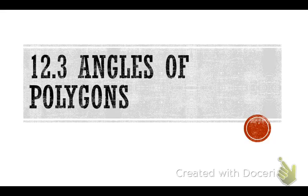Today we're in section 12.3, angles of polygons. Yesterday we actually learned our first polygon, we just didn't call it that. Yesterday we learned about triangles. A triangle meets the criteria of a polygon, so that is our first polygon.